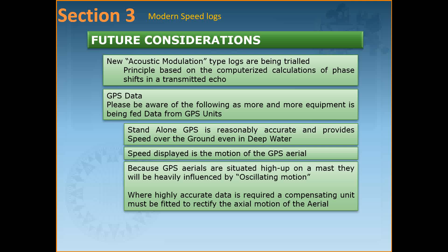Speed displayed is the motion of the GPS aerial. Because GPS aerials are situated high up on a mast they will be influenced by the oscillatory motion. Where highly accurate data is required, a compensating unit must be fitted to rectify the axial motion of the aerial.